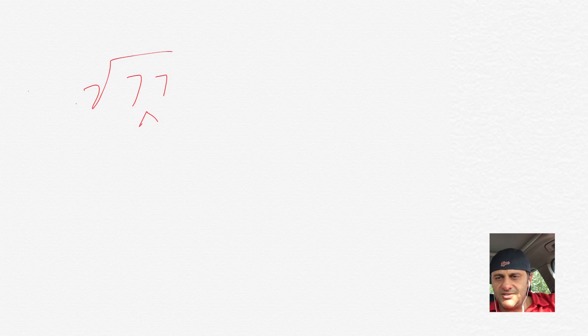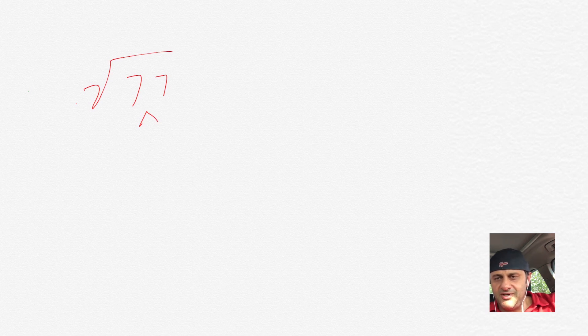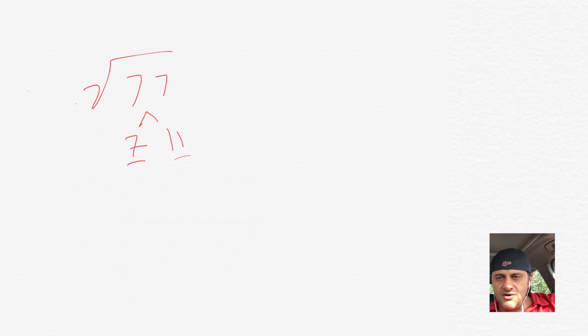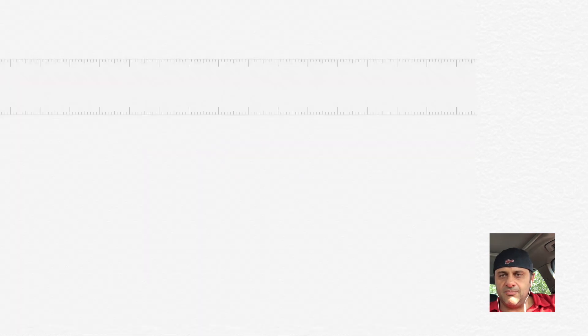Let's do another one. Square root of 77. That one, it's not an even number. So 2 doesn't go into it. 3 doesn't go into it. 4 doesn't go into it. 5 doesn't go into it. 6 can't go into it. 7 would go into it 11 times. So we have a 7 and 11. Both of those are prime numbers. And so 7 times 11, we can't do anything with that. The square root of 77 is the most simplified version of that number.